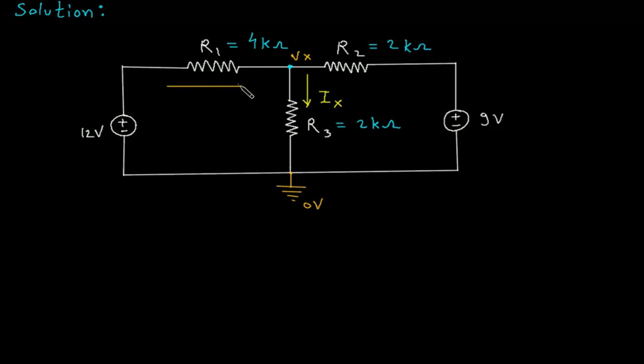Let's assume the direction of current. Let's say this is I1 and this is I2. Now we will apply KCL at node Vx. So if we apply KCL at this node, then summation of entering current I1 plus I2 is equal to summation of current leaving the node. So Ix is the leaving current, therefore I1 plus I2 minus Ix is equal to 0.